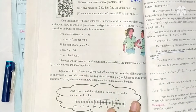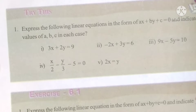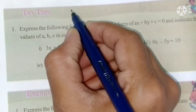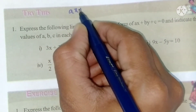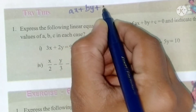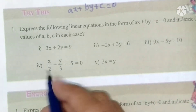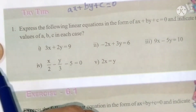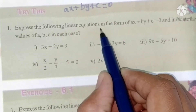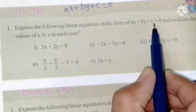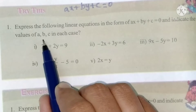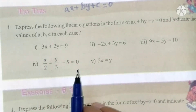Now, page number 128, Try This. Before this try this, the general form of a linear equation in two variables is ax plus by plus c equals zero. This is the general form. Now express the following linear equations in the form ax plus by plus c equals zero and indicate the values of a, b, and c in each case.